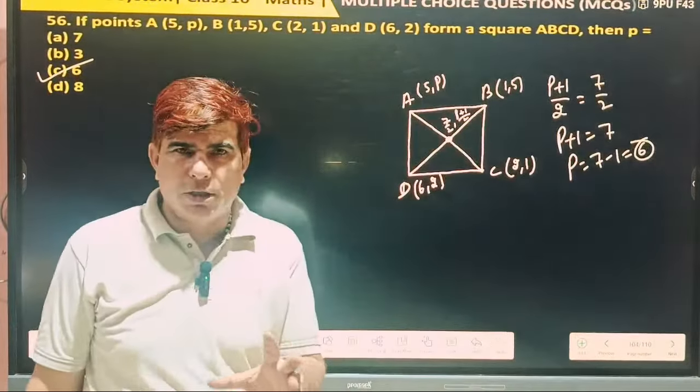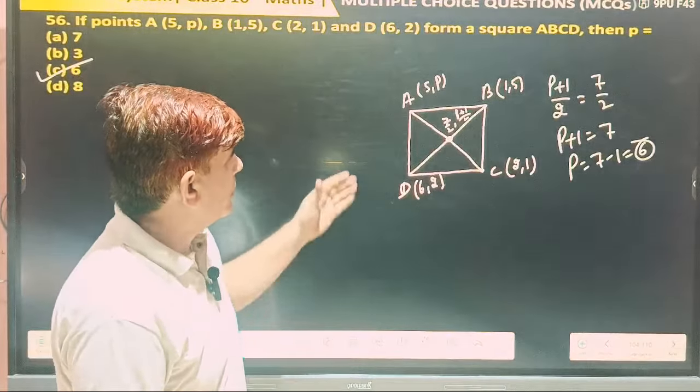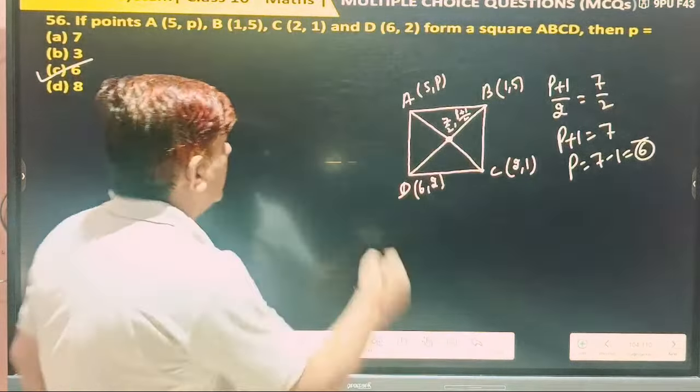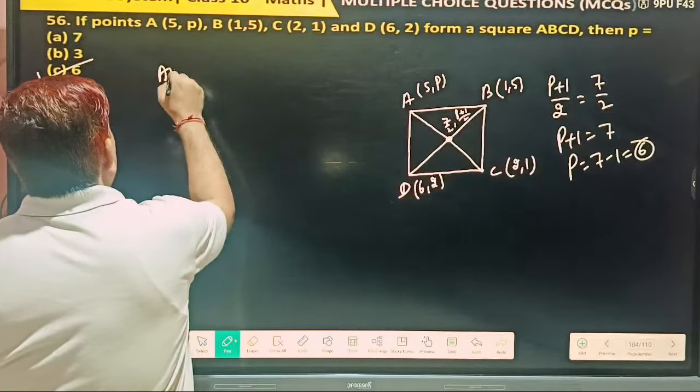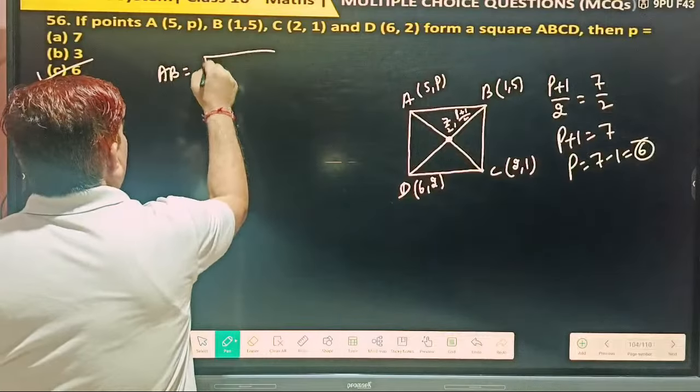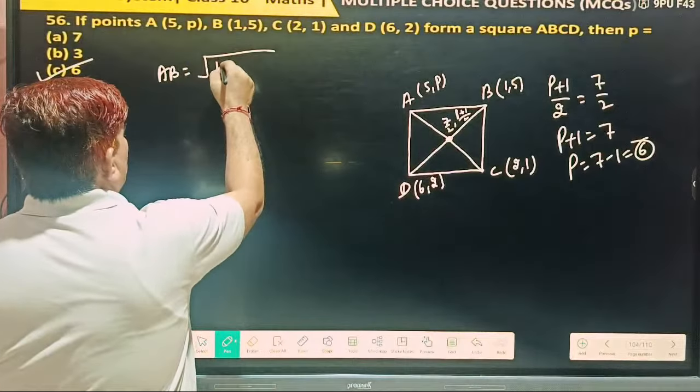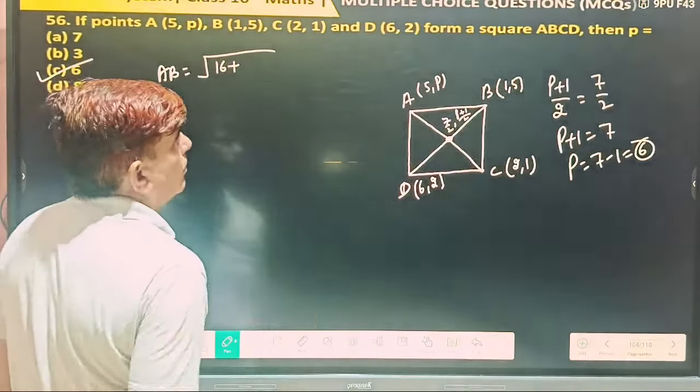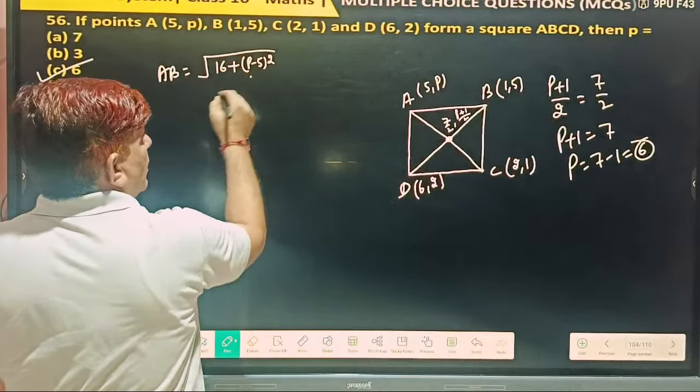Understood? If solving in competitive exam. Another what? Another method. This. This I have taken. AB. What I have taken? AB I have taken. AB equal to under the root, 5 minus 1, 4, 16. Plus P minus 5 whole square. Then find out.